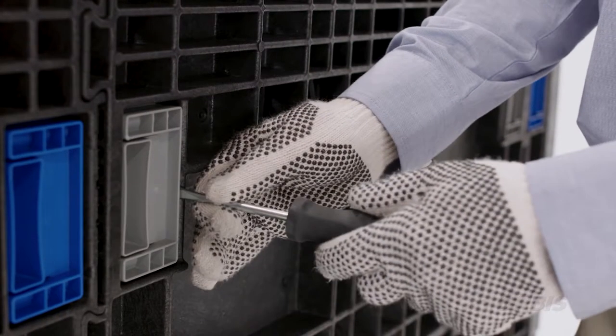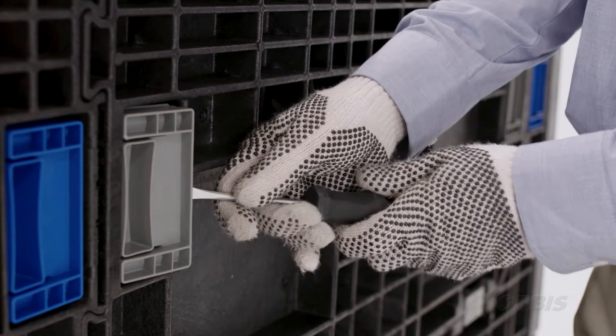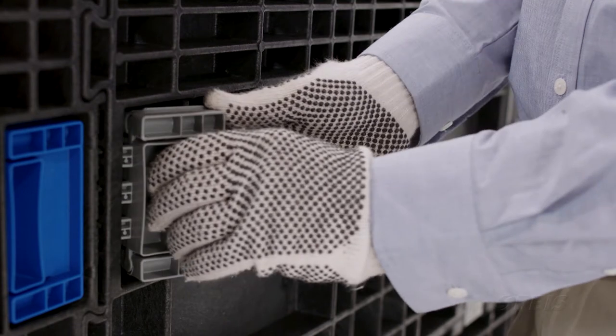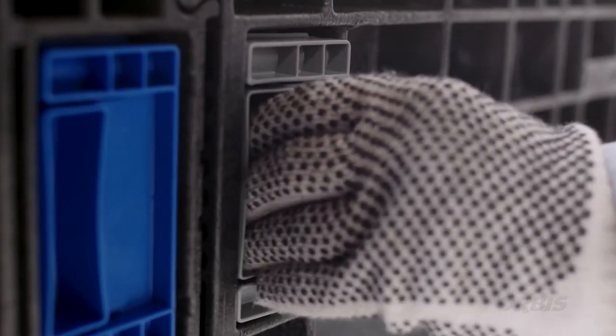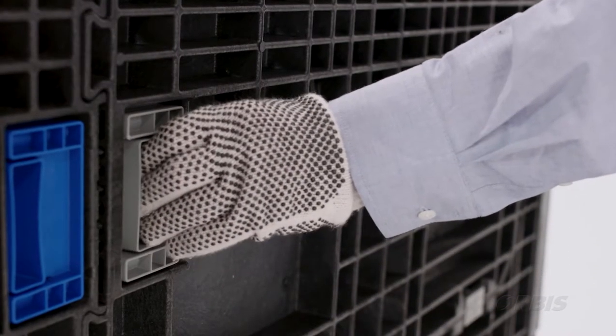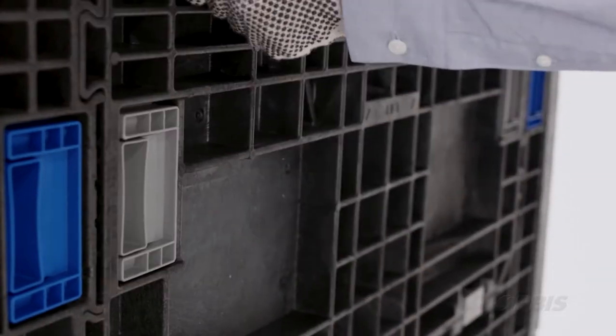Insert the flathead screwdriver in between the latch and the tab that is holding the latch in place. Push the latch over so it disengages from the tab and the latch will be able to be removed. Remove latch and push new latch in place. Take the new latch and place it in the latch location. Push down on the latch and it will snap into place. Latch replacement is the same for the sidewall and the access door.